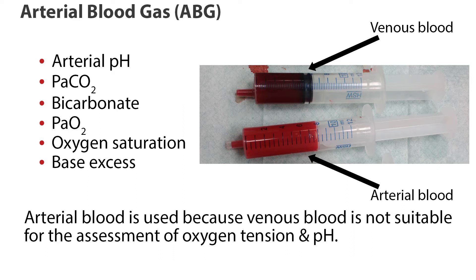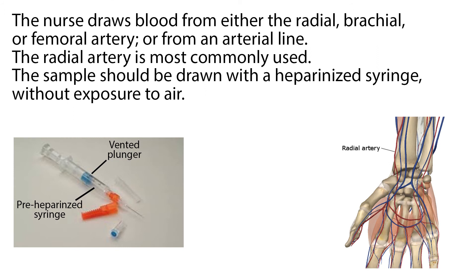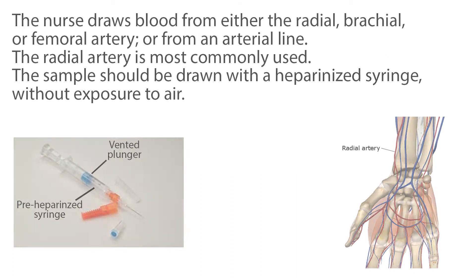Arterial blood is used because venous blood is not suitable for the assessment of oxygen tension and pH. The nurse draws blood from either the radial, brachial, or femoral artery, or from an arterial line. The radial artery is most commonly used because it is accessible, easily positioned, and more comfortable for the patient. The sample should be drawn with a heparinized syringe, without exposure to air. The sample is then placed on ice, which slows the clotting of blood, and rushed to the lab for analysis.